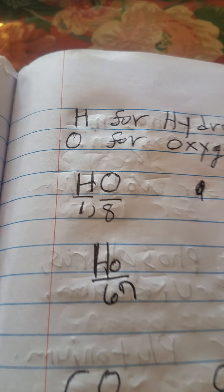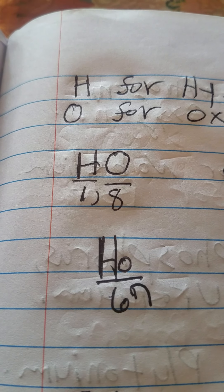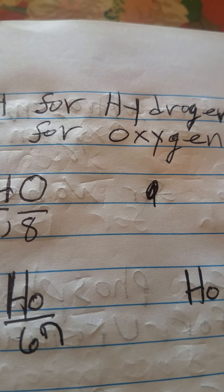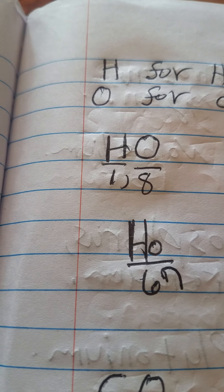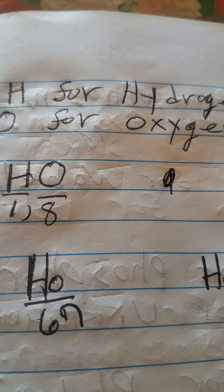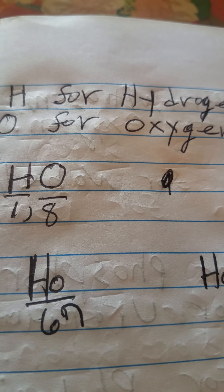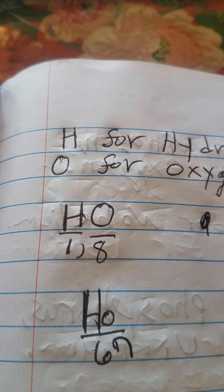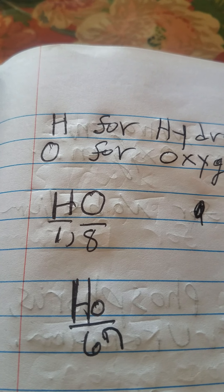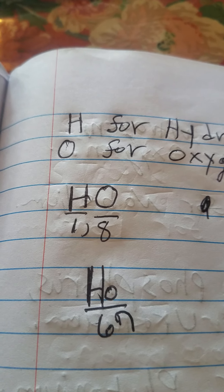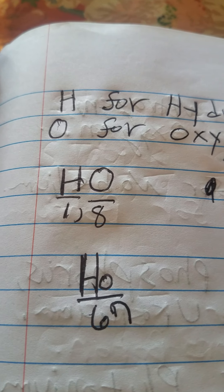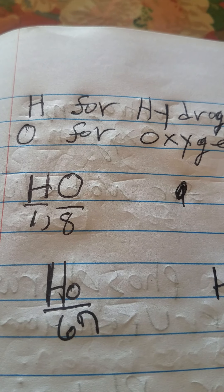For example, we have a capital H for hydrogen and a capital O for oxygen. The atomic number for H, or hydrogen, is 1. The atomic number for O, or oxygen, is 8. So you know that capital H is actually hydrogen and capital O is oxygen.